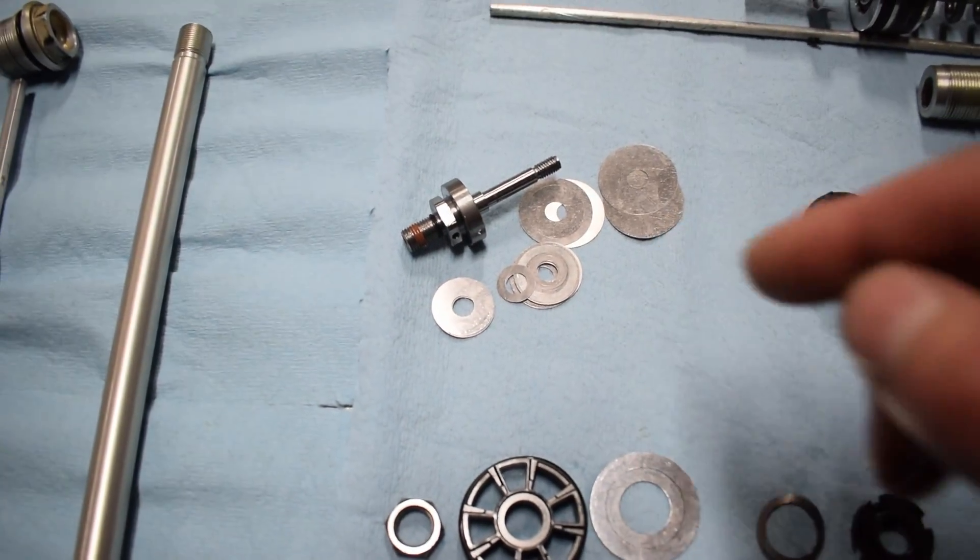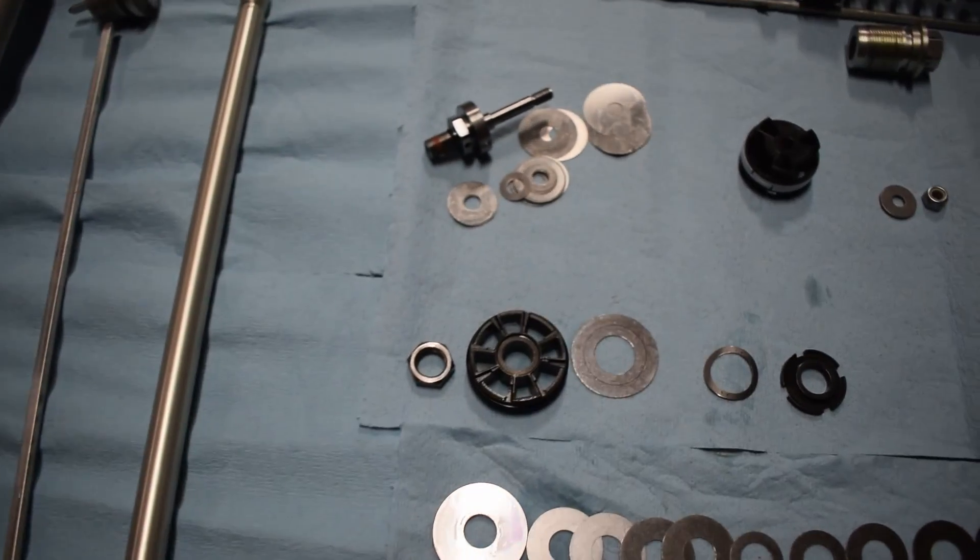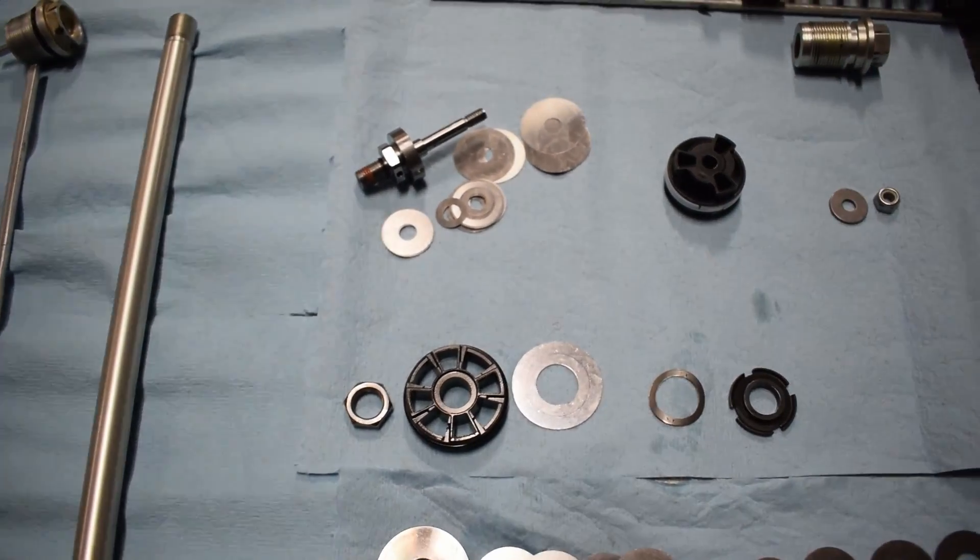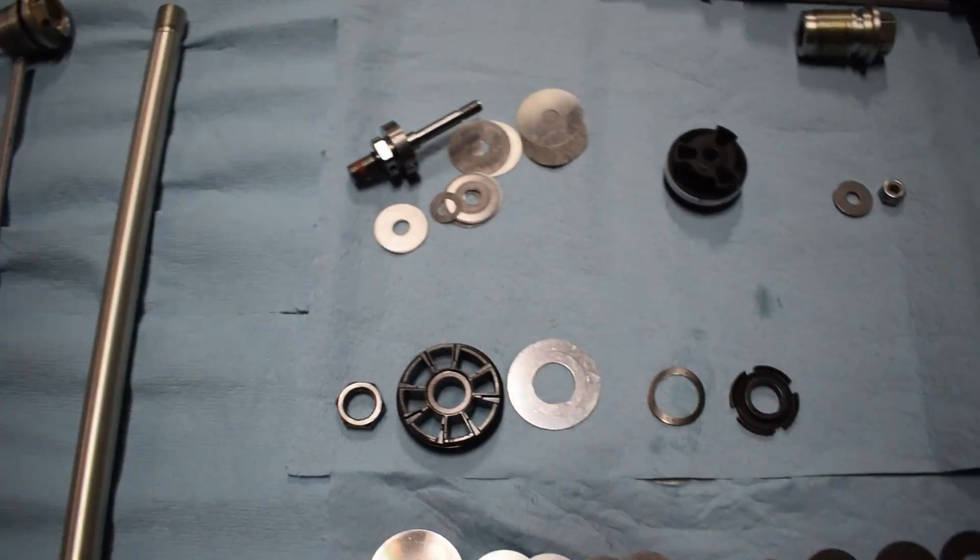They have a lot more shims on this one than they do on this other fork because it needs to be twice as stiff, so it's basically twice as many shims. There's more math to it. Because this piston's bigger, there's more fluid going through it. You don't actually theoretically need twice the shims, but there's some math behind that, and we could get into that at a later date.